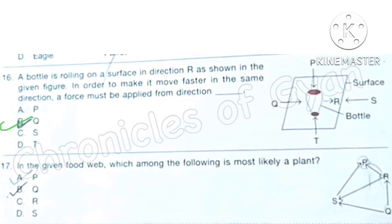Question 17: In the given food web, which among the following is most likely a plant? Here Q is most likely a plant. Option B, Q is the correct answer.